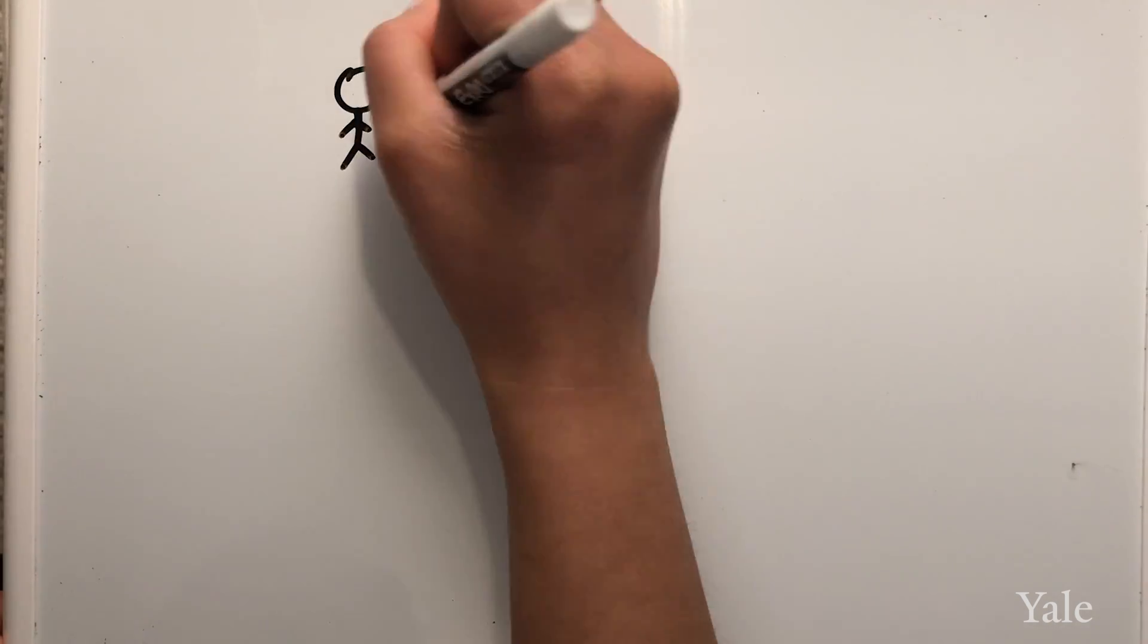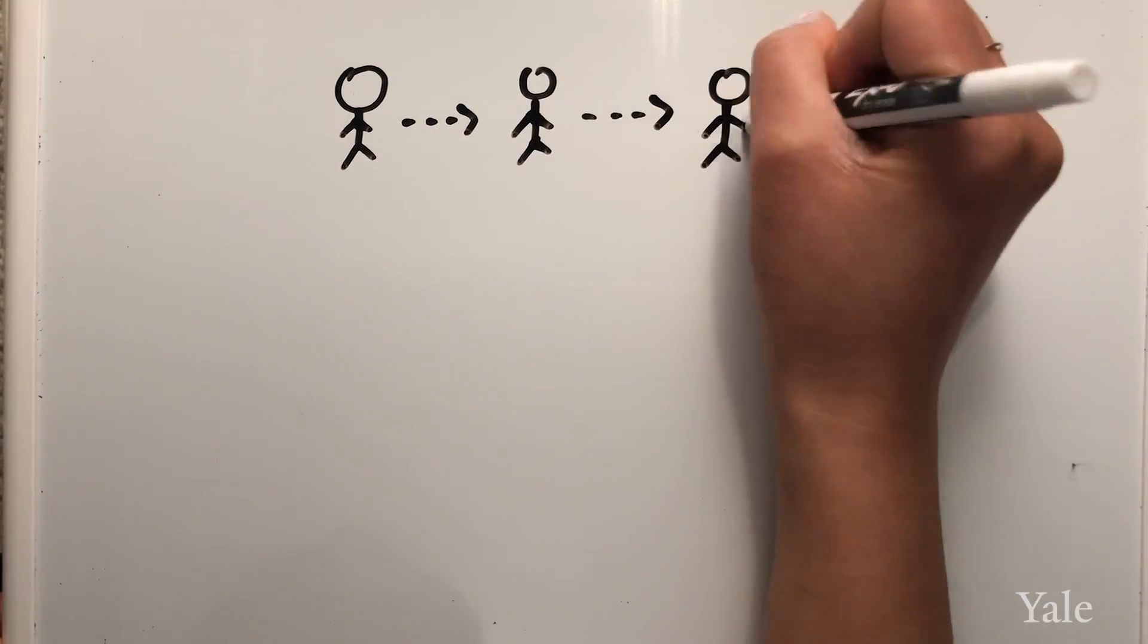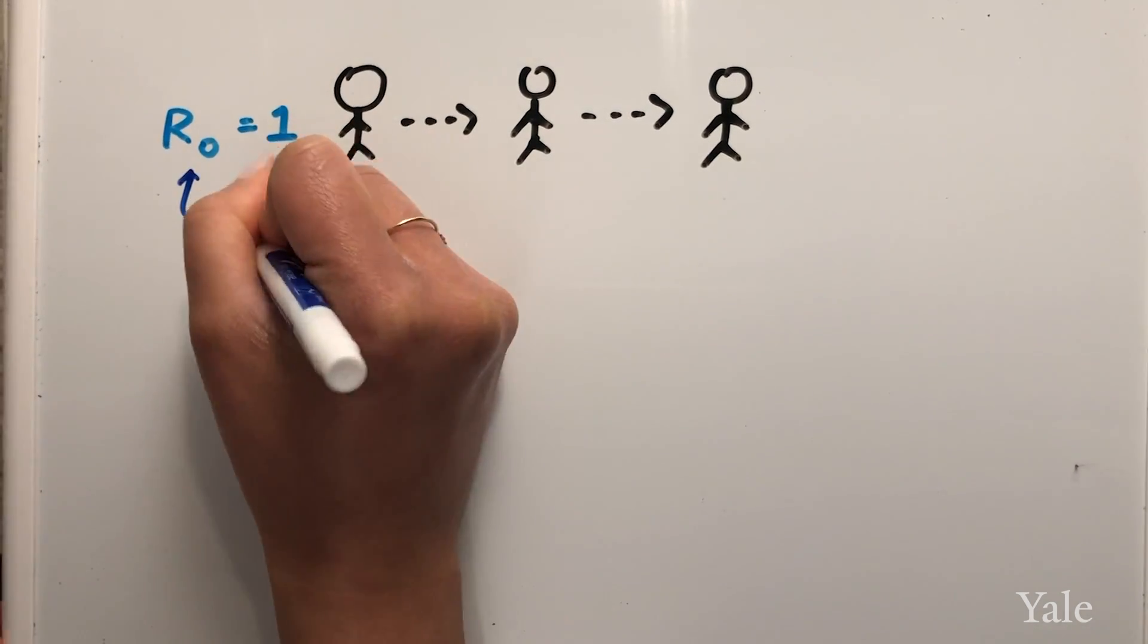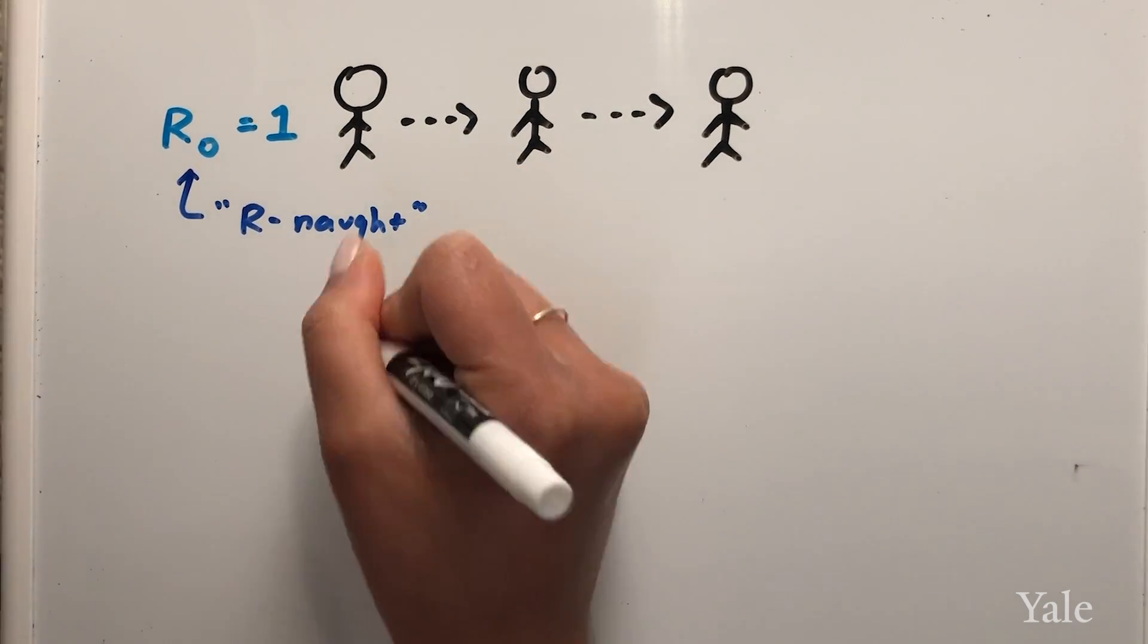How do epidemiologists describe how contagious a disease is? For example, if one existing infection will cause one more new infection and so on, this would be an R0 of one.